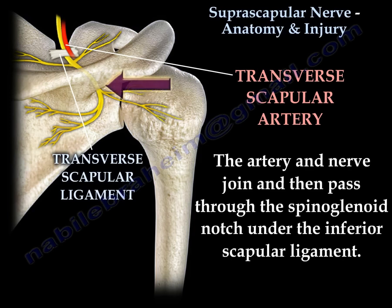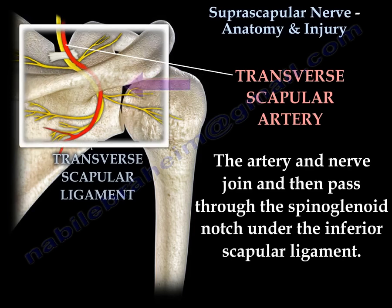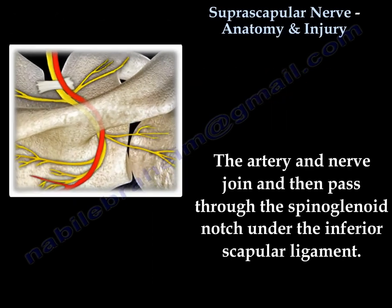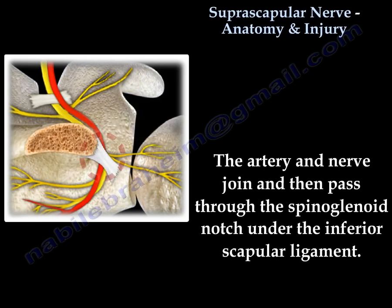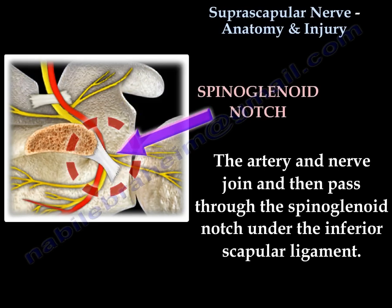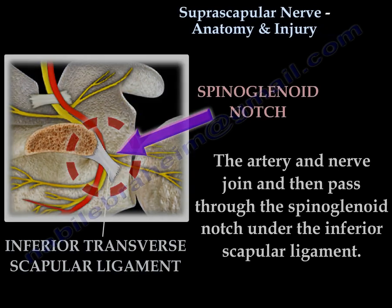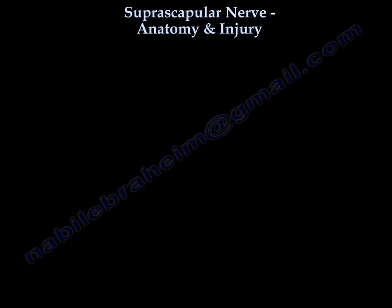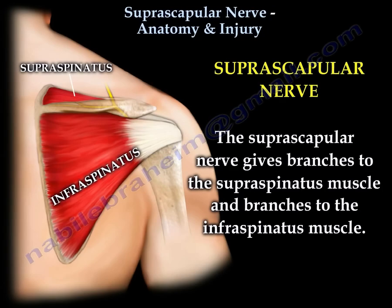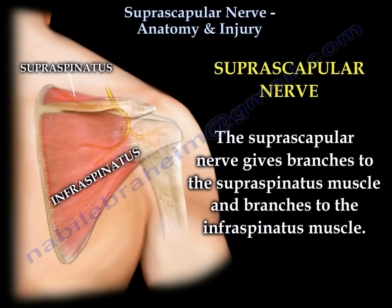The artery and nerve join and then pass through the spinoglenoid notch under the inferior scapular ligament. The suprascapular nerve gives branches to the supraspinatus muscle and infraspinatus muscle.